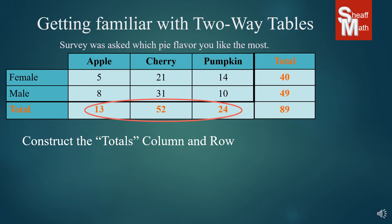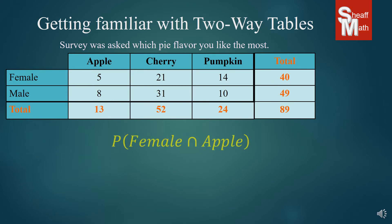So these are the totals for the flavors, those are the totals for the male and female, and this one is the grand total. Now our first question is in a different type of notation. It's P with a parenthesis and the stuff inside. P stands for probability — the probability of whatever's in the parenthesis happening. We also have a new symbol: the upside-down U, which is the intersection symbol, also known as the joint symbol. They're asking you: what's the probability, according to this study, of you picking a random person and it being a female who likes apple pie?